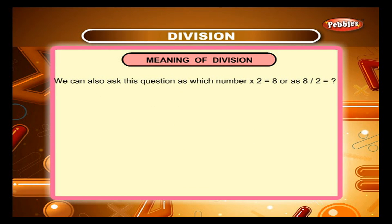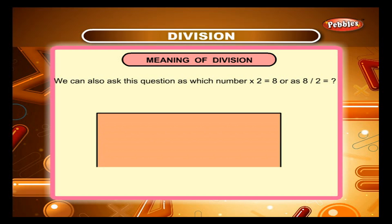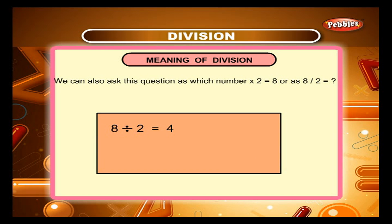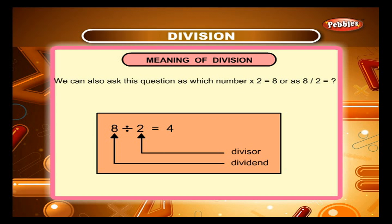We can also ask this question as: which number multiplied by 2 is equal to 8? Or as: 8 divided by 2 is equal to what? In the sum, 8 divided by 2 is equal to 4. This symbol means the operation of division. The number 8 is called the dividend. The number 2 is called the divisor. And the number 4 is called the quotient.